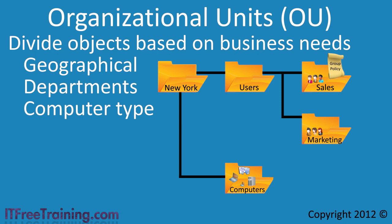This is the fundamental difference between an OU and a Group. An OU is used to sort your users but, like files on your hard disk, the user only exists in one location. Groups, on the other hand, contain any number of users from any part of the domain and thus offer more flexibility than organizational units.